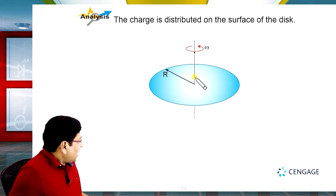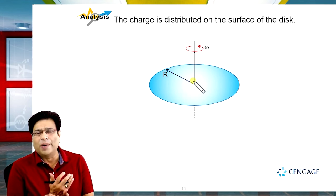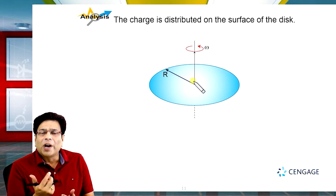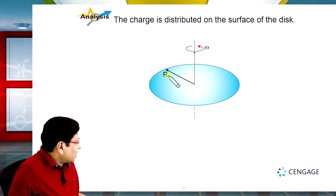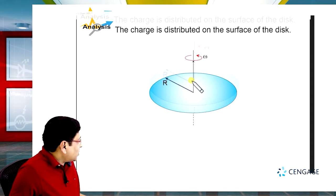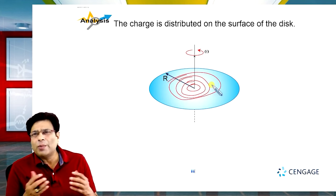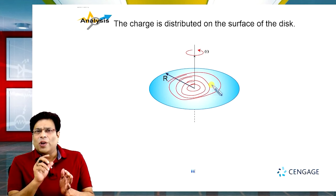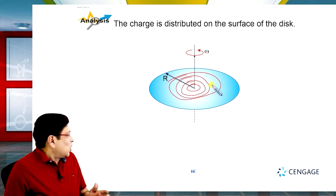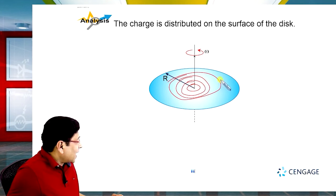Let us consider a ring — we can consider coaxial rings. All coaxial rings are rotating about the same axis of rotation, and the radius of the ring ranges from 0 to capital R. We can consider a number of rings rotating about the same axis, forming different current-carrying loops.